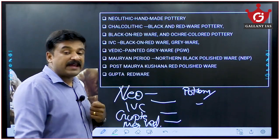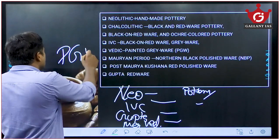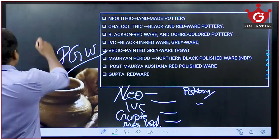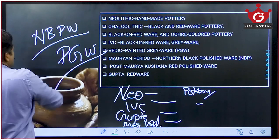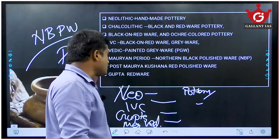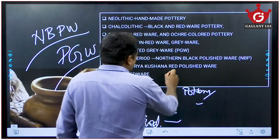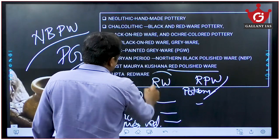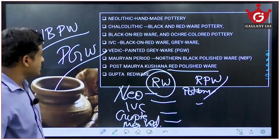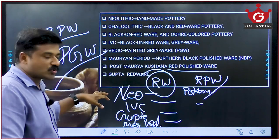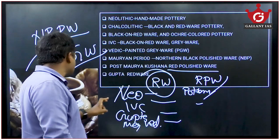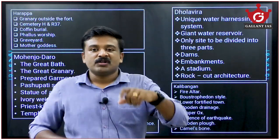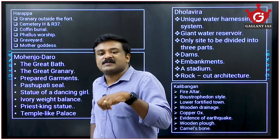Vedic people used Painted Grey Ware (PGW). Mauryans used Northern Black Polished Ware (NBPW). Post-Mauryan Kushanas used Red Polished Ware. Guptas used Red Ware. Understanding the different pottery of different ages and cultures is important — UPSC has asked this type of question in prelims. You should also know various cultural sites of ancient and medieval times, as UPSC has asked questions from this area several times.